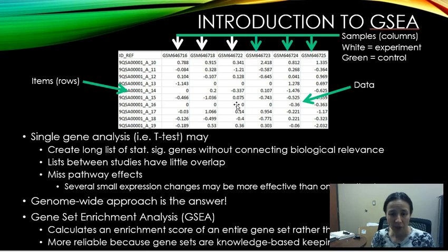It calculates an enrichment score for an entire gene set rather than individual genes. And it's more reliable because those gene sets are knowledge-based. For example, genes within a pathway. And this will keep biology in the context of what we're trying to examine.